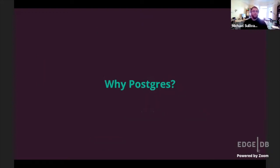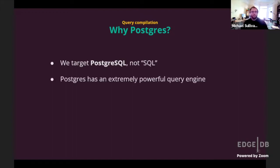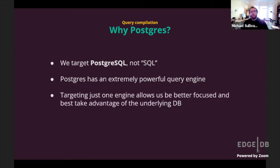Now let's talk about why Postgres. We target Postgres SQL specifically — not generic SQL. Postgres is an extremely powerful query engine that handles complex queries very well, with important features like lateral join that have been available and well-optimized for a long time. Targeting one engine allows us to be much more focused: we can take advantage of the specific database we support and design something that really pushes it to its limits, rather than being spread thin targeting the intersection of many different databases.